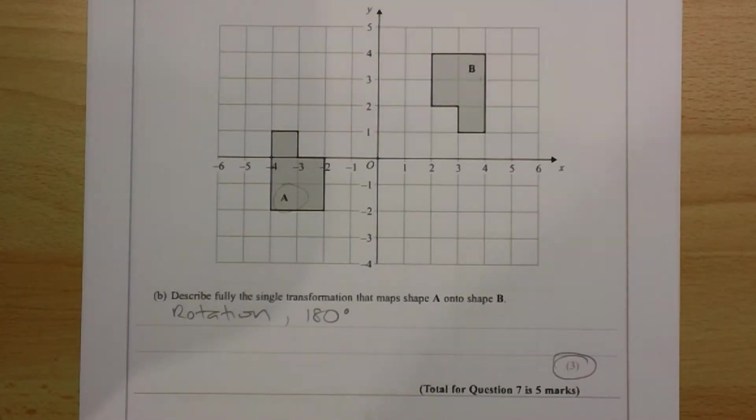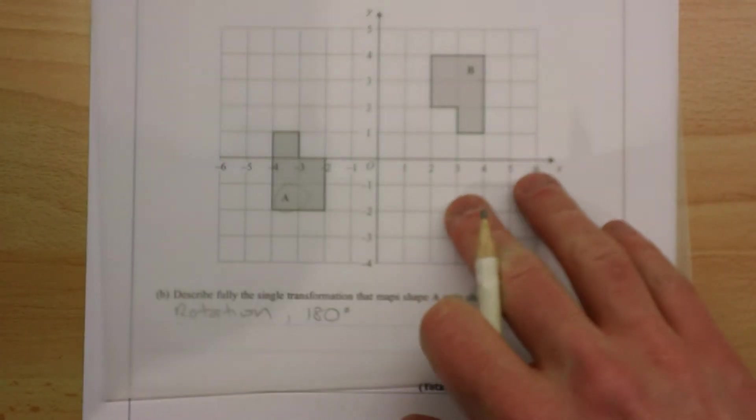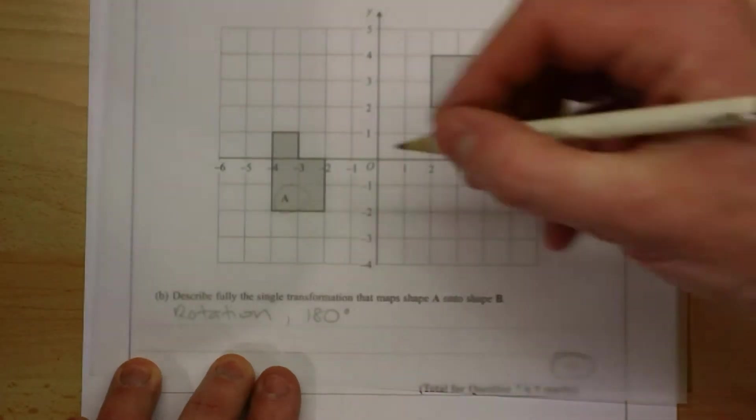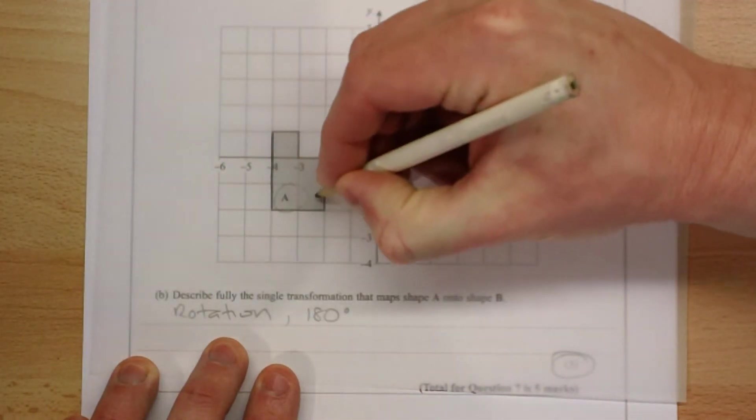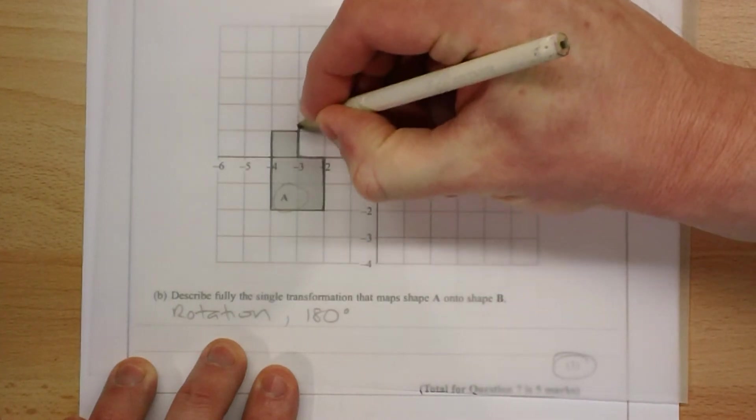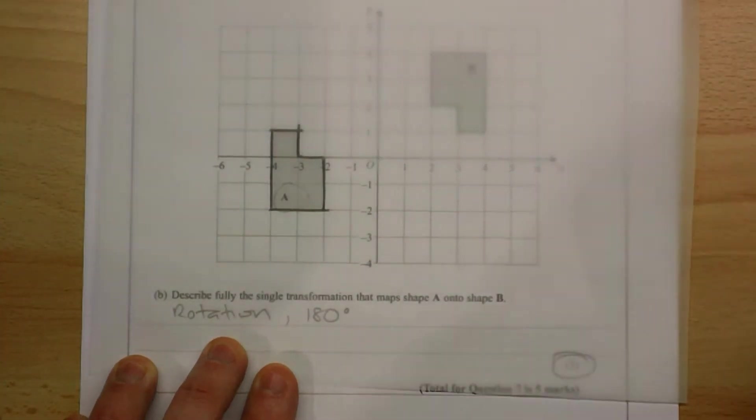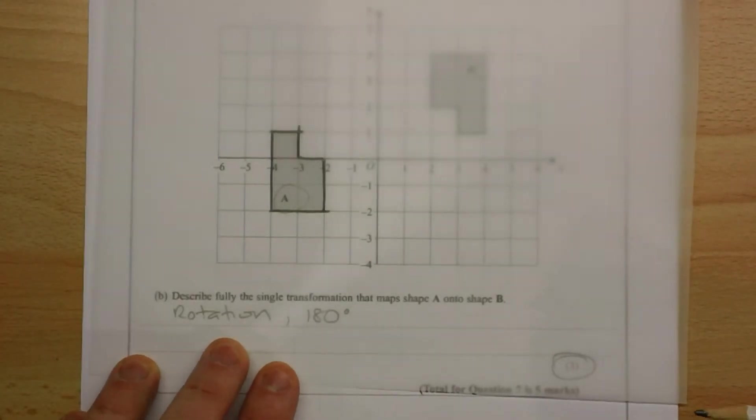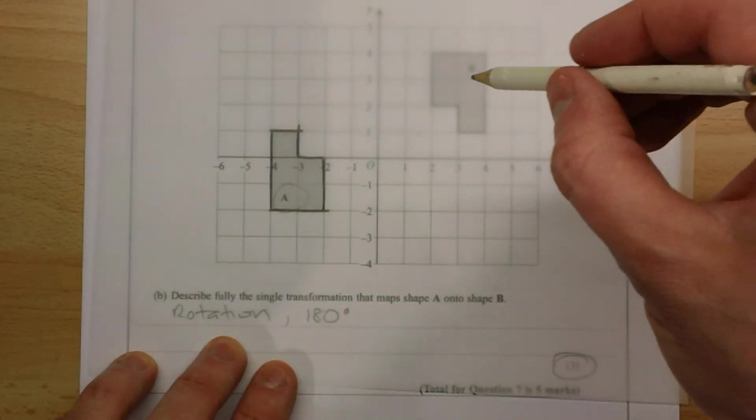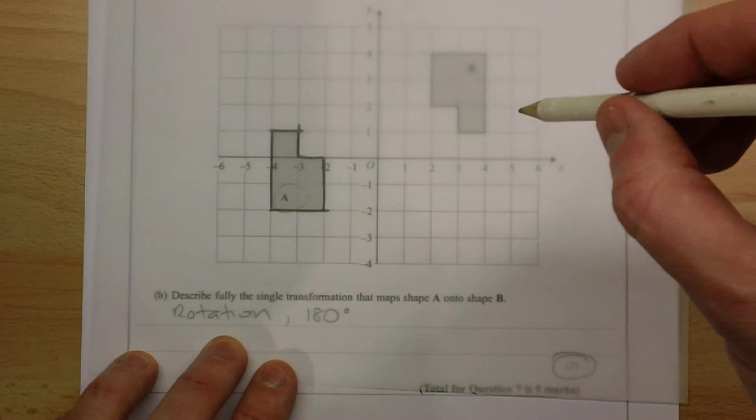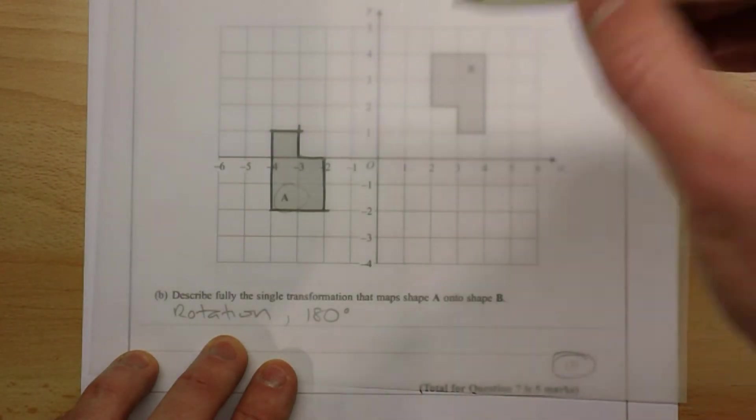In order to get the center of rotation, get yourself a piece of tracing paper, which is available to you in the exam. Trace over the shape that you're starting with. The center of rotation is the point at which you put your pencil on the paper, and stays fixed when you turn the shape.